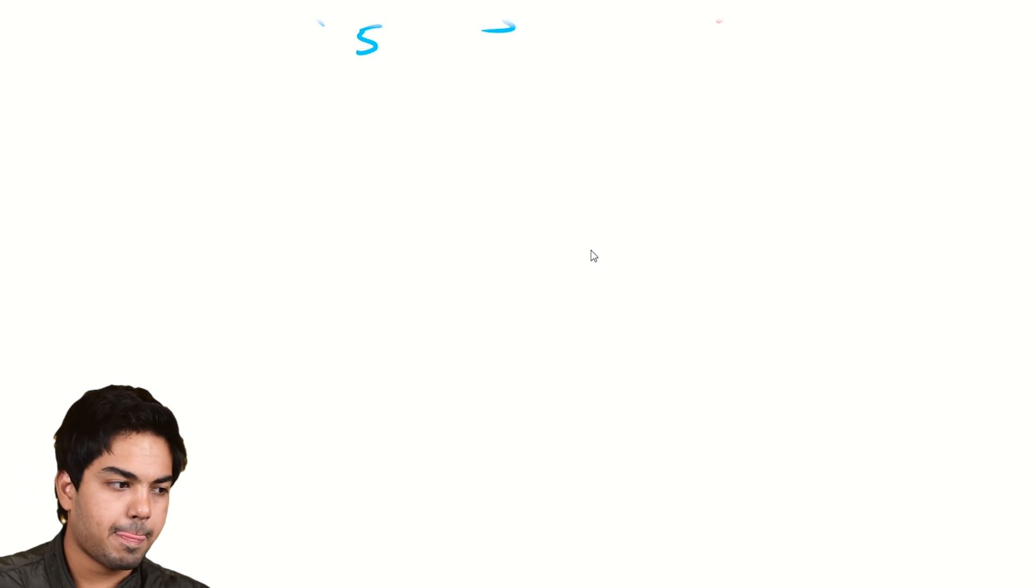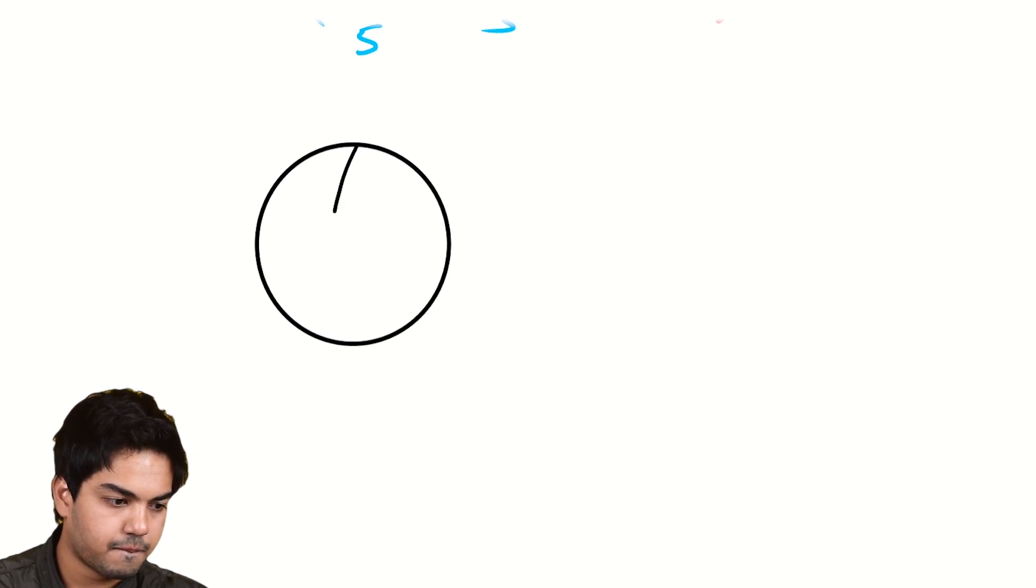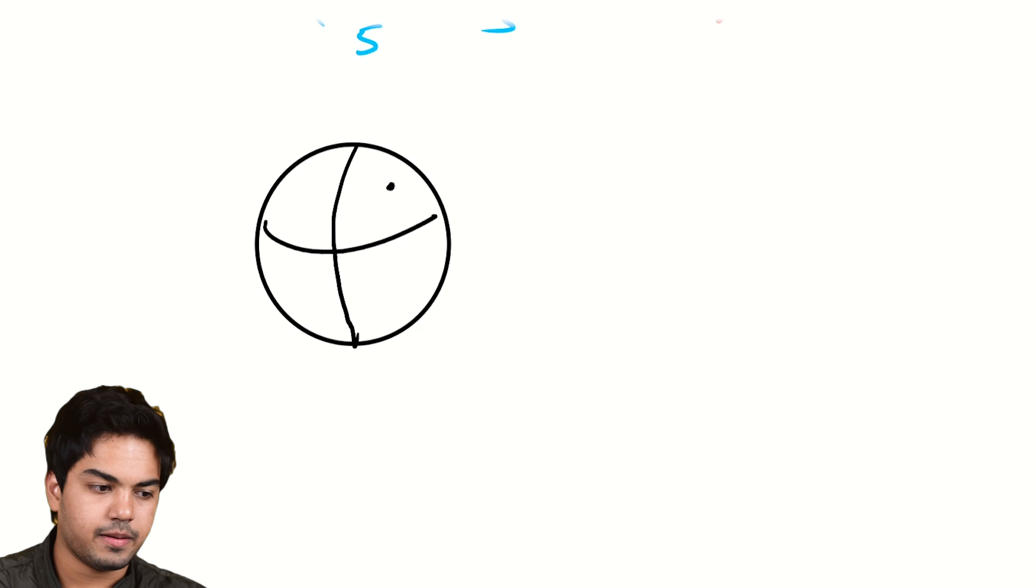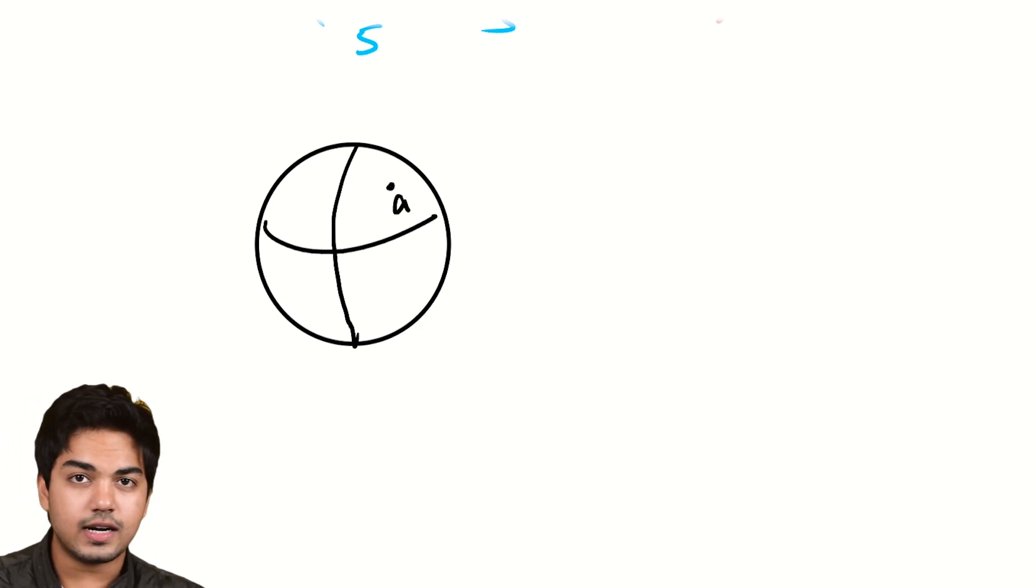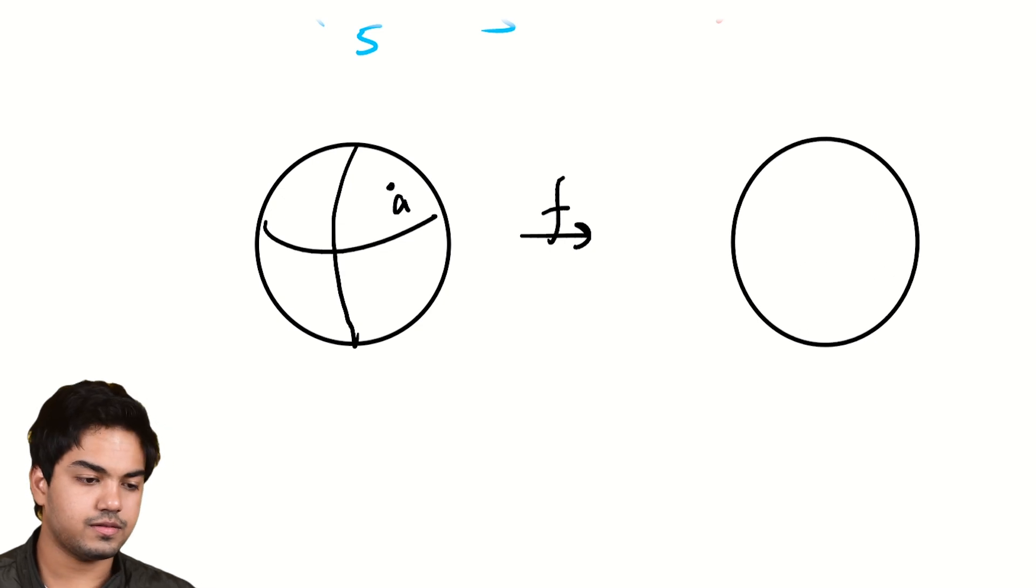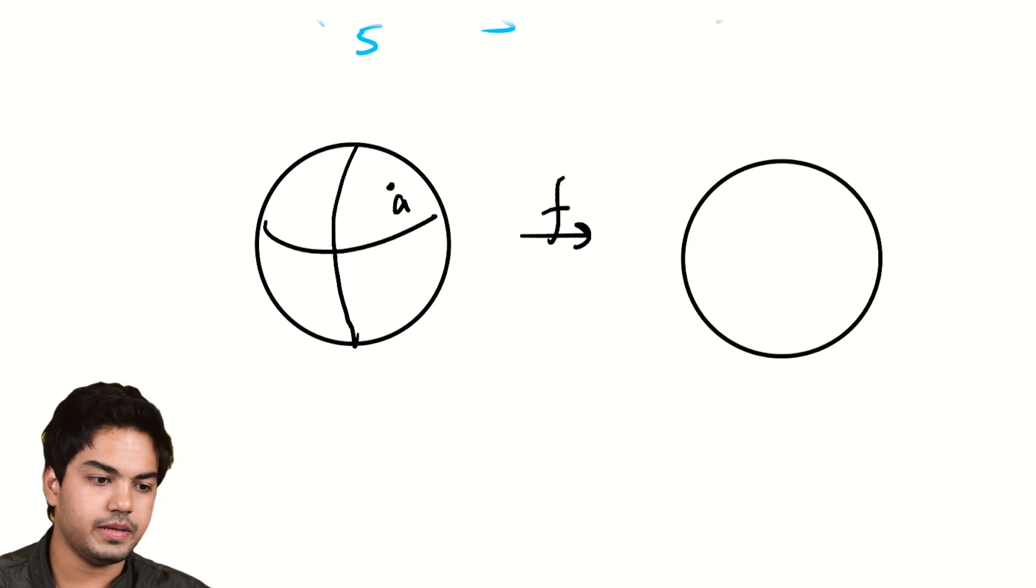Fix a point A. So you take the sphere and fix some point A. Say it goes to some point B. On a sphere, you can't really tell two points apart, so it doesn't really matter. But say it does. So say after you map everything via f, you still have a sphere, obviously, you're mapping the sphere to itself. But say A goes to some point B.